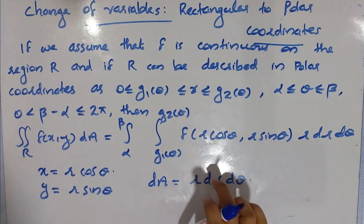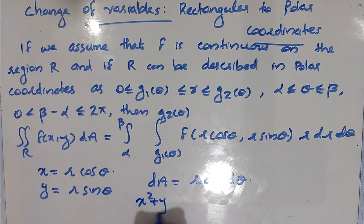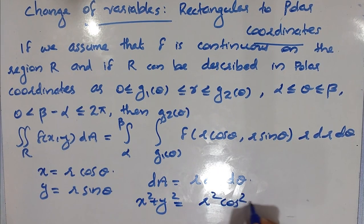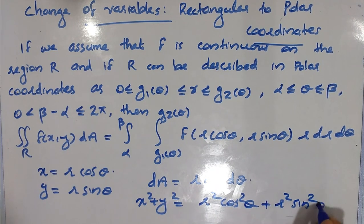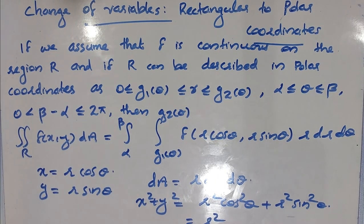Consider x² + y². What is R² cos²θ + R² sin²θ? R² equals R² times (cos²θ + sin²θ), which equals R² times 1. So x² + y² = R². Therefore the function f(x, y) can be replaced using R² wherever x² + y² appears.